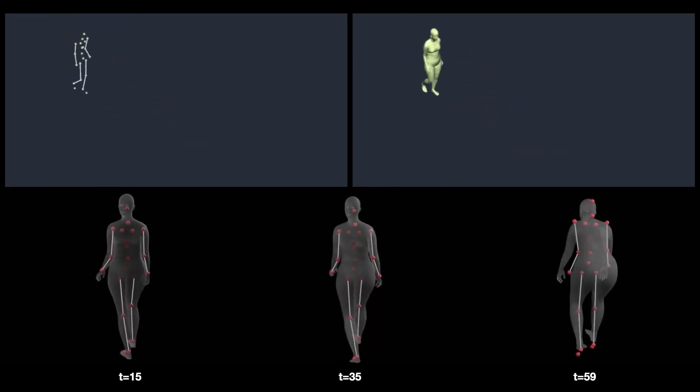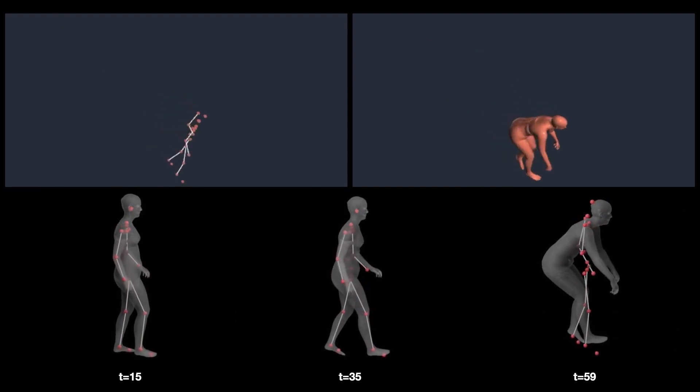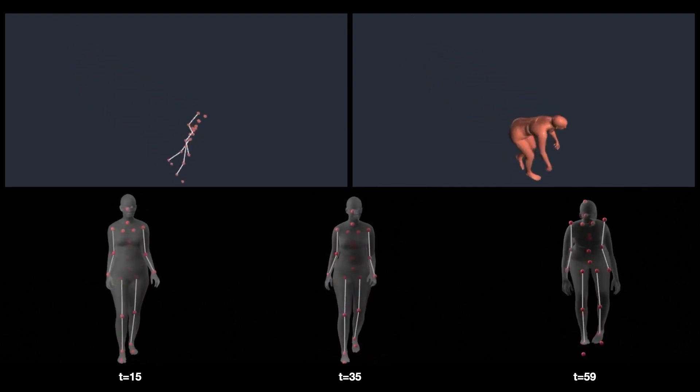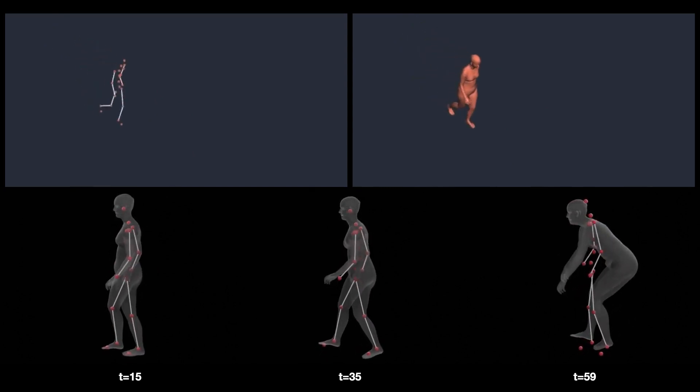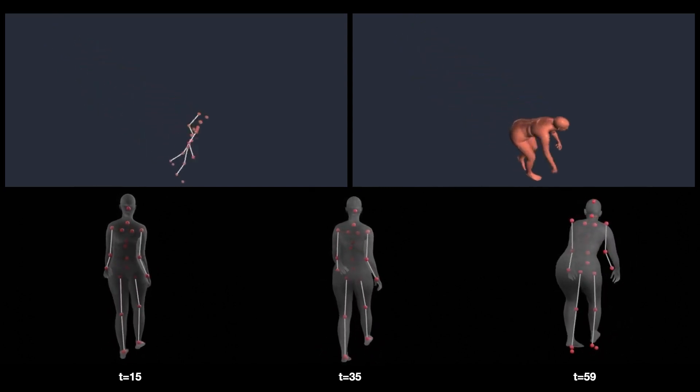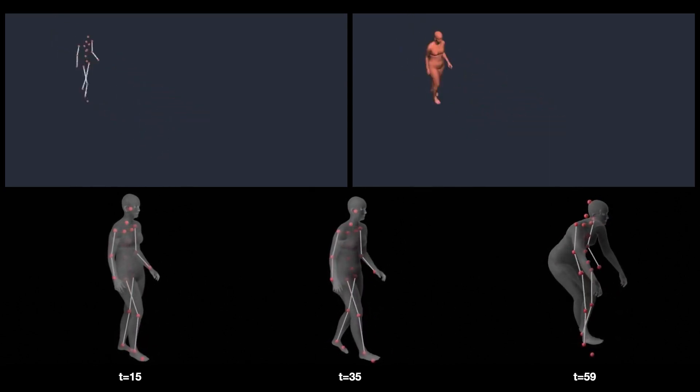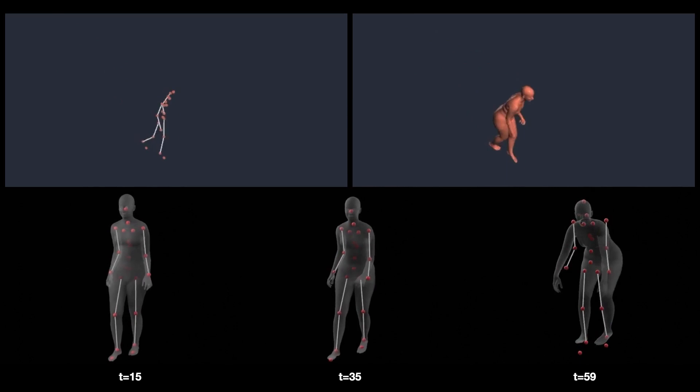This results in either distorted body shapes or invalid poses and movements. Current benchmarks evaluate the 3D error of the joints, but do not consider whether the predicted joints correspond to valid bodies. State-of-the-art methods with the lowest 3D errors still produce invalid bodies.